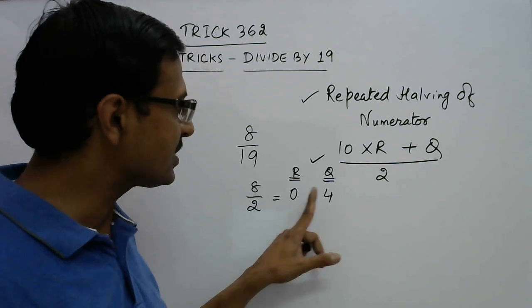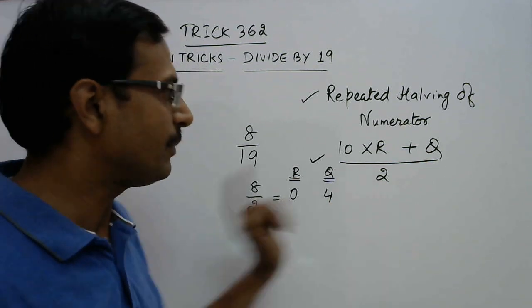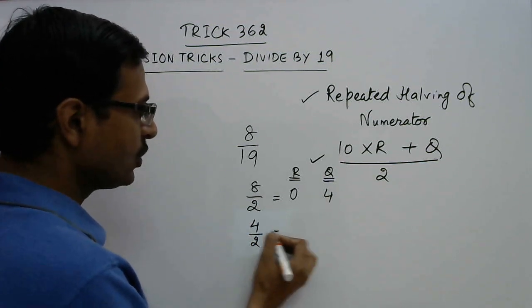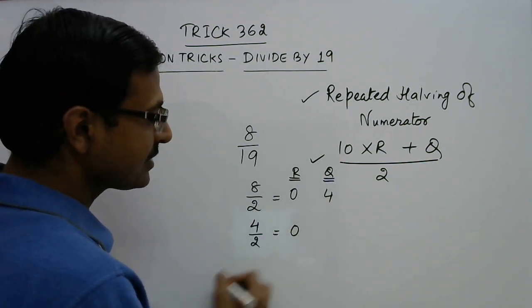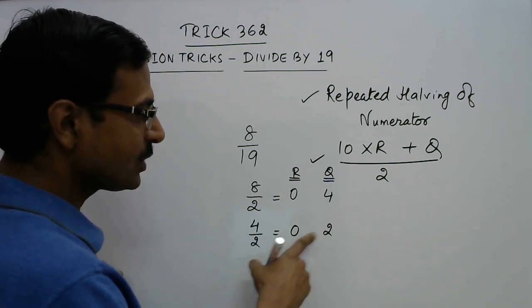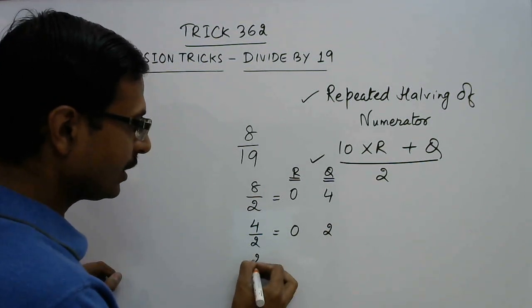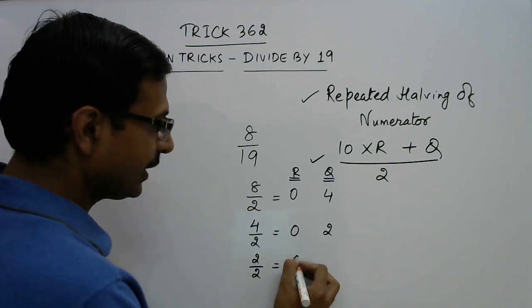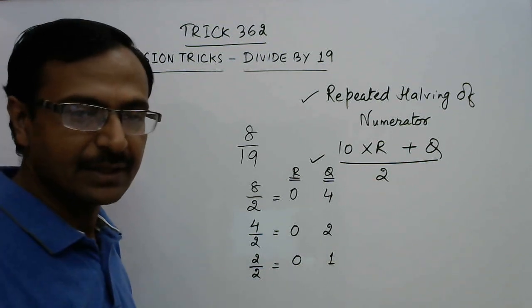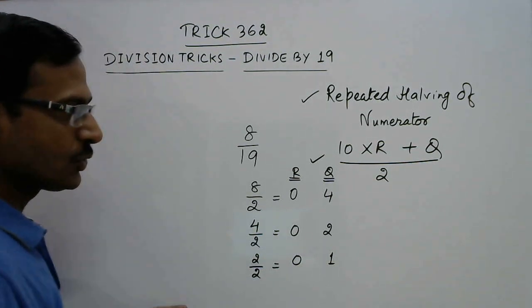So obviously when the remainder is 0, just take the quotient and divide it by 2. So in the next step you have to divide the quotient again by 2, so 4 divided by 2, again remainder is 0 and quotient is 2. So whenever remainder is 0, just divide the quotient by 2 again. So 2 by 2, again it is 0 and it is 1.